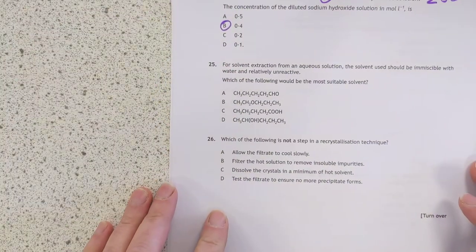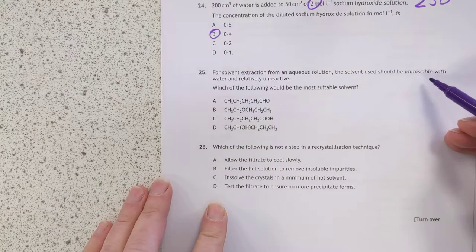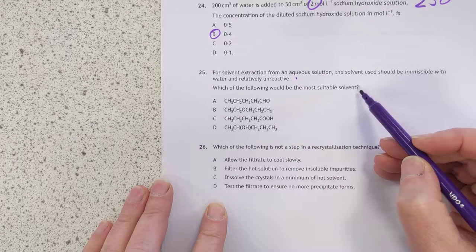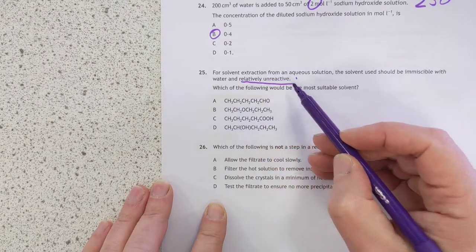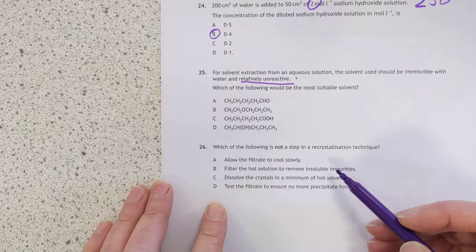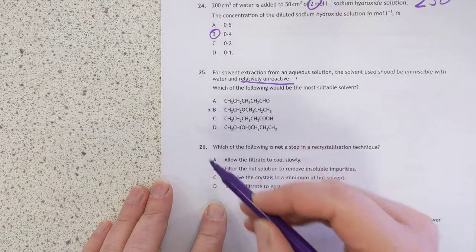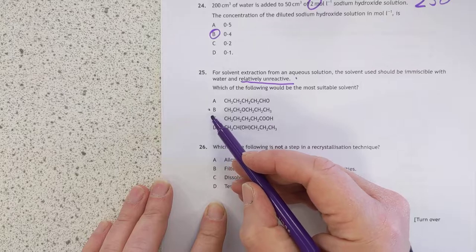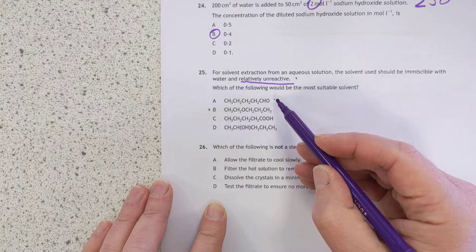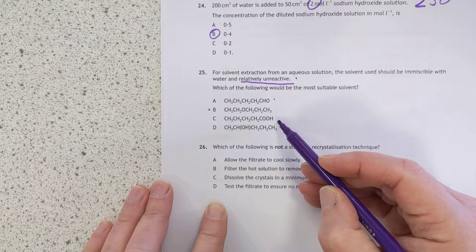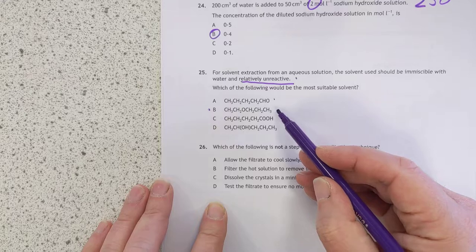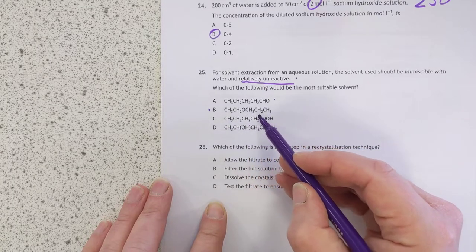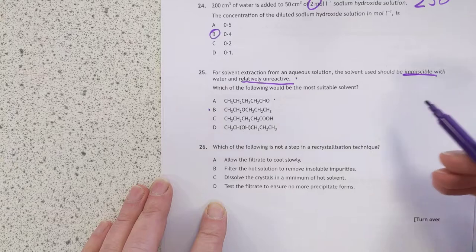Number 25. For solvent extraction from an aqueous solution, the solvent used should be immiscible with water and relatively unreactive. Which of the following would be the most suitable solvent? Relatively unreactive. Well, I'm seeing two that are not reactive here. I'm seeing an ether. And that's... Well, actually, that's the most unreactive one because that can be oxidized to carboxylic acid. That can be oxidized. What I'm going to go with this one has definitely been the least reactive. Ethers are chemically very unreactive. Also, larger ethers like this one, 2, 3, 4, 5 carbons. Yeah. That will be immiscible with water. So I'm going to go with B.